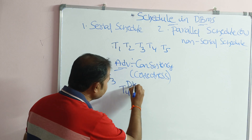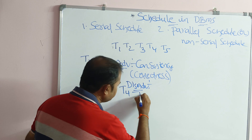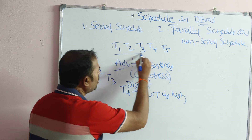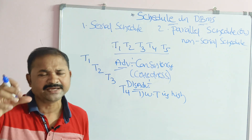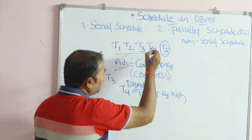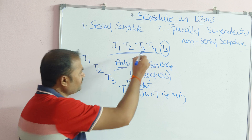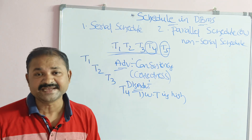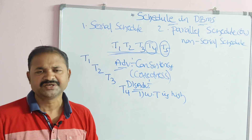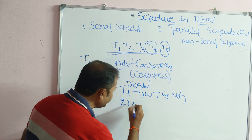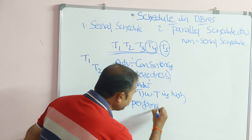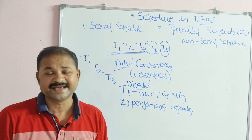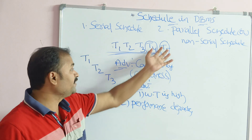Now let us see the disadvantages of serial schedule. The first disadvantage is that the waiting time is very high. If all transactions enter memory simultaneously, T5 has to wait until the previous transactions are completed. The second disadvantage is that performance will degrade, because many transactions are waiting for a longer period of time for their turn.